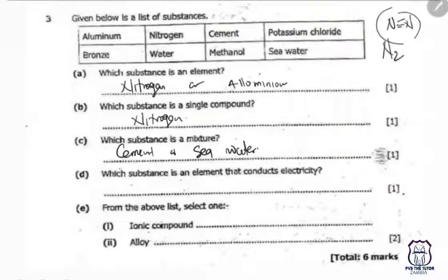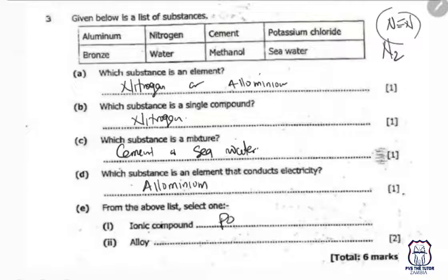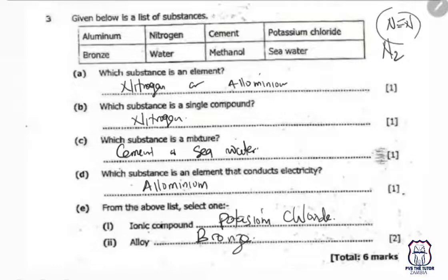Which substance is an element that conducts electricity? Aluminium can conduct electricity. Potassium chloride is an ionic compound that can conduct electricity, but only when in the molten state. From the list, select one ionic compound — that is potassium chloride. An alloy from the list is bronze. Hope this was helpful, see you in the next video.